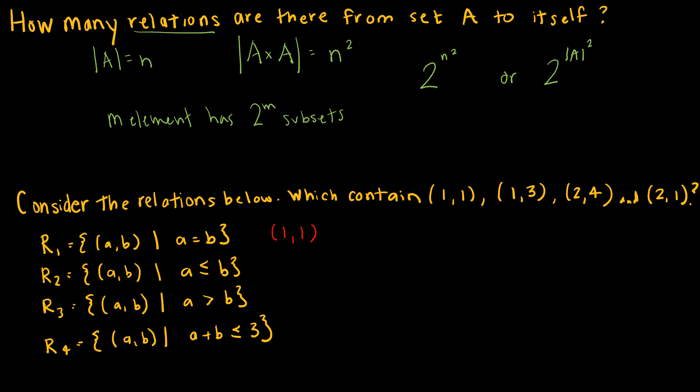For R2, R2 contains the ordered pairs A, B such that A is less than or equal to B. So that means 1,1 would be included because 1 is equal to 1. 1,3 would be included because 1 is less than 3. 2,4 would be included because 2 is less than 4, but 2,1 would not be included because 2 is not less than 1.